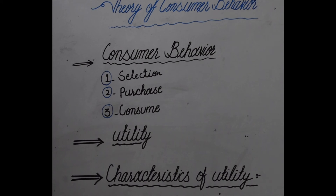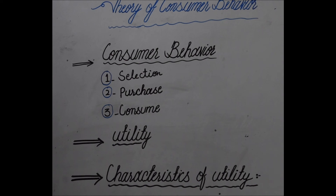Now, what are the characteristics of utility? Utility depends on the place — the utility of an article can be changed by changing its location. For example, the utility of wood in a forest, or the utility of sand in a desert, will not be very significant. But by transferring these commodities to urban areas, their utilities increase significantly, as both articles will be used in urban areas for very important purposes — such as construction or forming materials. So utility depends on place and changes with a change in place.